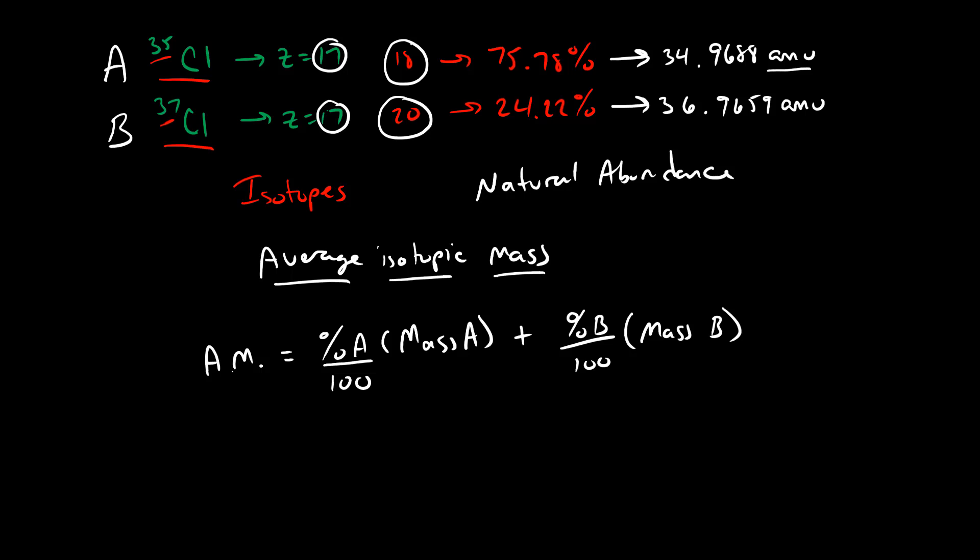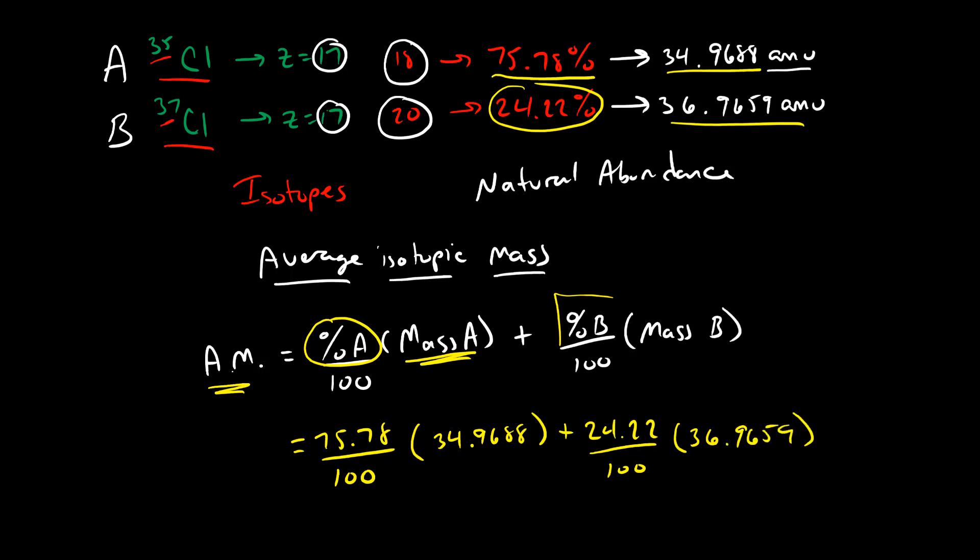We have enough information to calculate the average mass. We know the percent of A. We're told that the chlorine-35 isotope is 75.78%, and we're going to convert this to decimal form, so we take it divided by 100. We're going to take this times the mass of isotope A, so 34.9688 plus the percent of isotope B, which we know is 24.22%, divided by 100 times the mass of isotope B, which is 36.9659. And this will allow us to calculate our average isotopic mass.